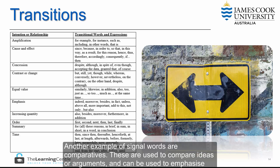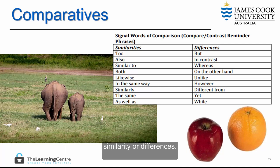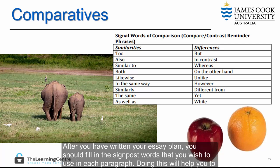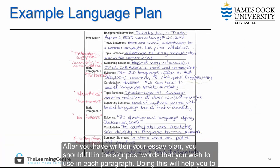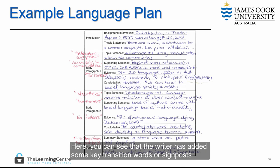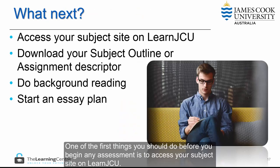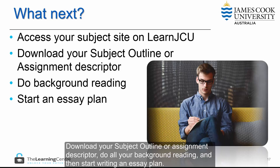Another example of signal words are comparatives. These are used to compare ideas or arguments and can be used to emphasize similarity or differences. After you have written your essay plan, you should fill in the signpost words that you wish to use in each paragraph. Doing this will help you to think about how you are structuring your argument and what you are trying to say. Here you can see that the writer has added some key transition words or signposts to the sections of the essay plan. One of the first things you should do before you begin any assessment is to access your subject site on LearnJCU, download your subject outline or assignment descriptor, do all your background reading, and then start writing an essay plan.